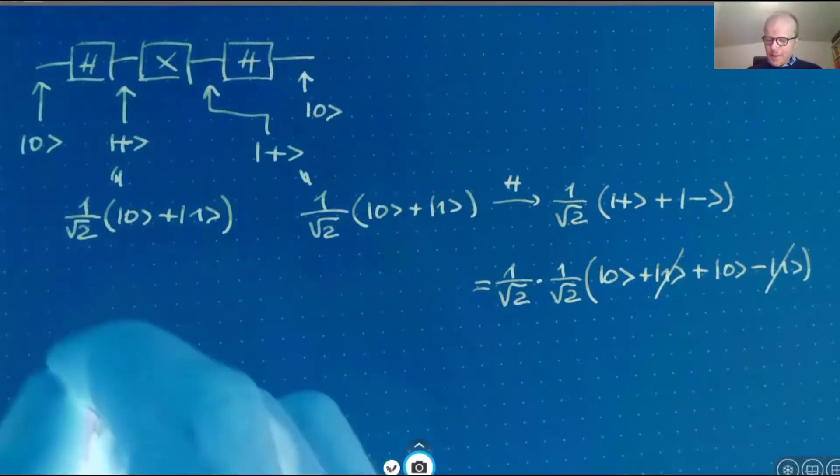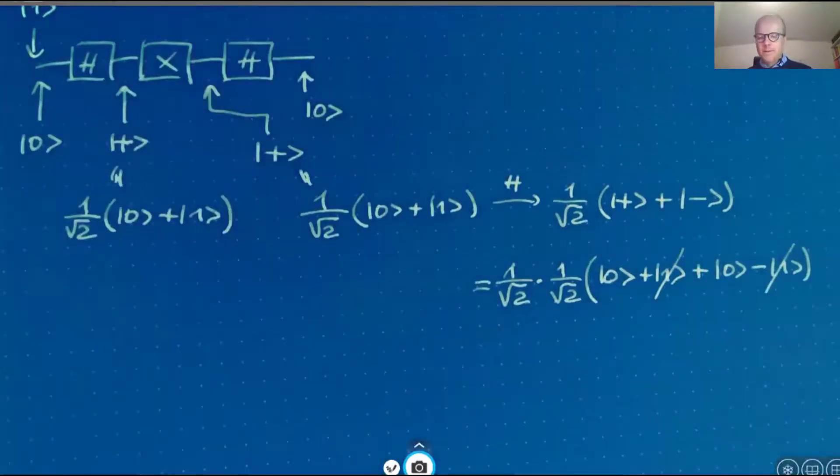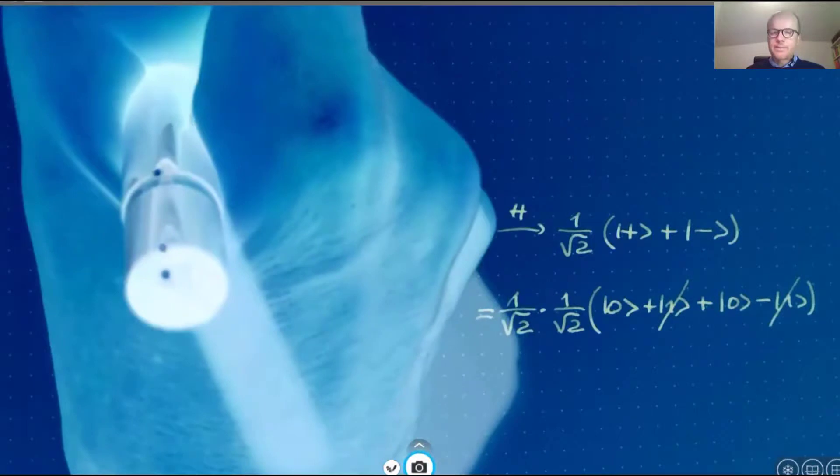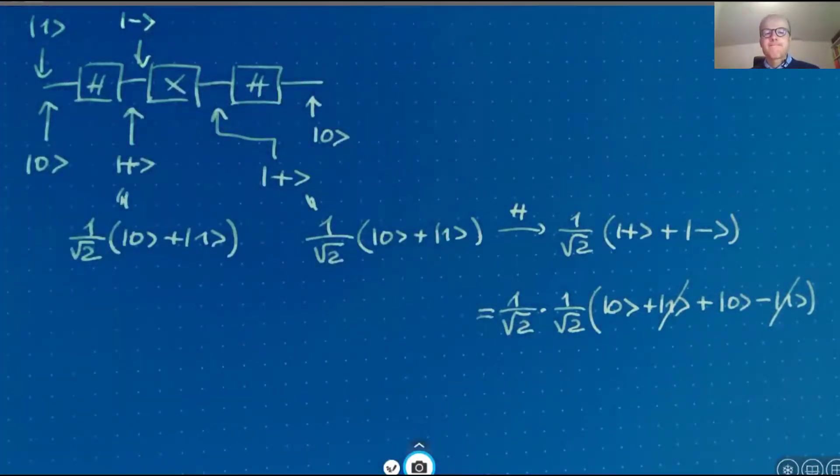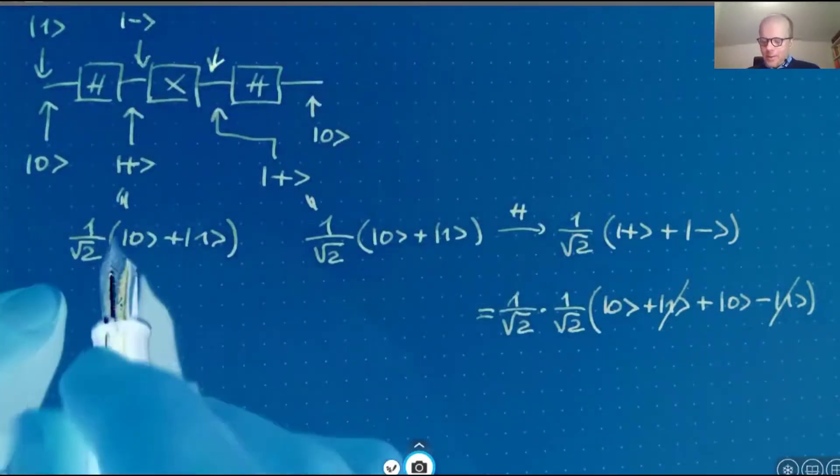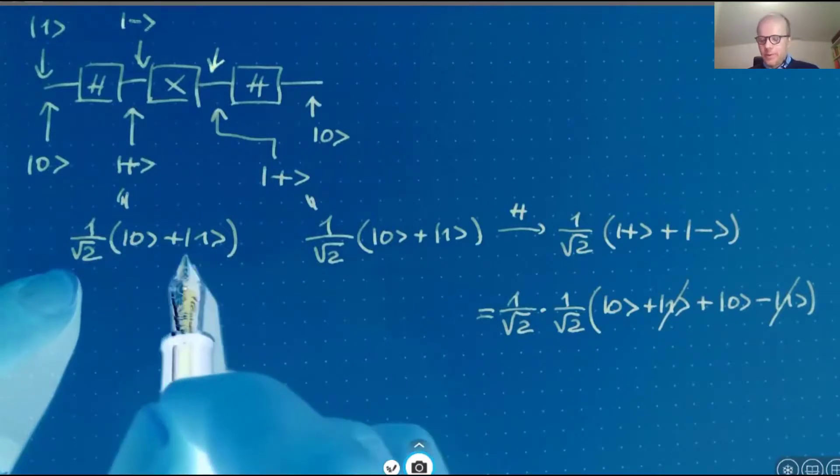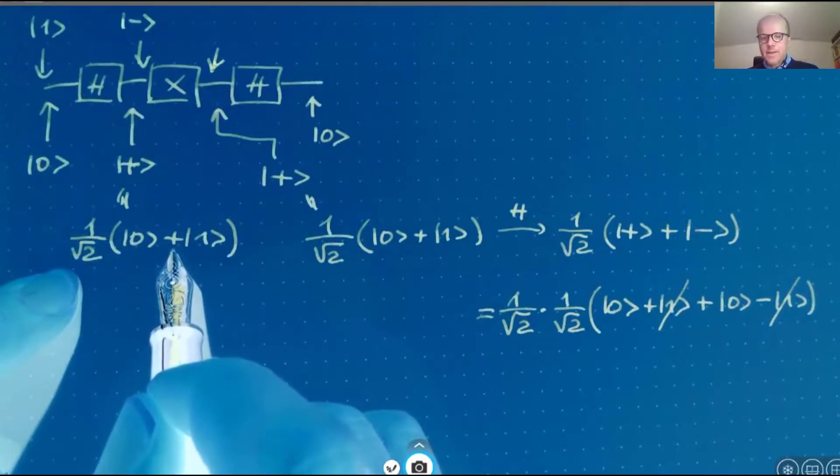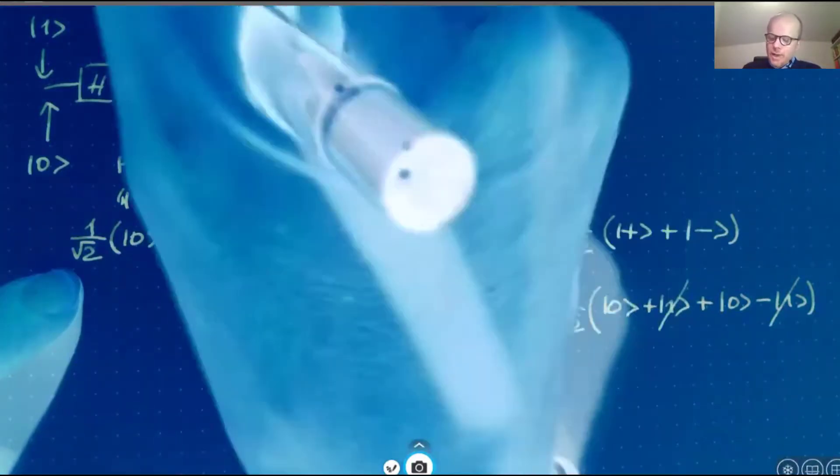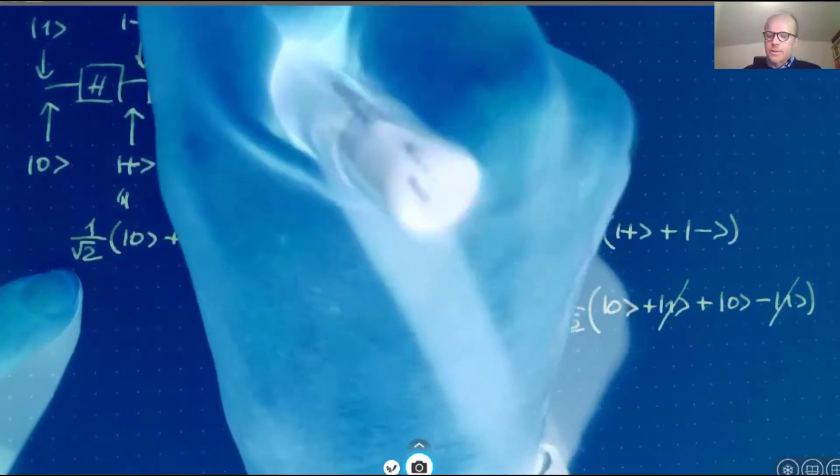Let's do the same for basis state one. Then Hadamard transforms this to the minus state. Then Pauli X. Well, what the minus state is this expression down here, but with a minus sign. Pauli X flips the basis states. So then after Pauli X, we have one minus zero. This is up to a sign. That's the minus state. So here, after Pauli X, we have minus the minus state.